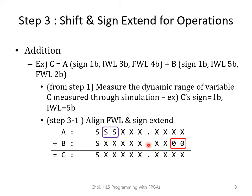Next, variable A has 3 IWL and variable B has 5 IWL. So you need to sign extend for variable A. Be careful not to add zeros here — you should sign extend to make the addition correct. Then you can do the addition.